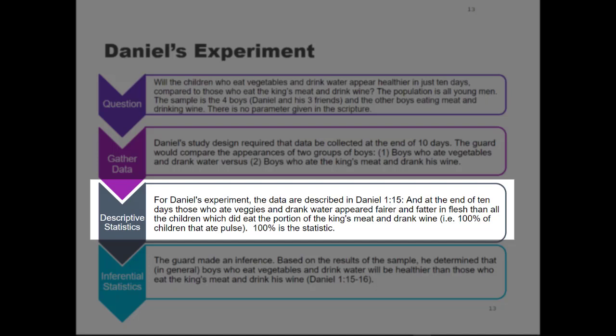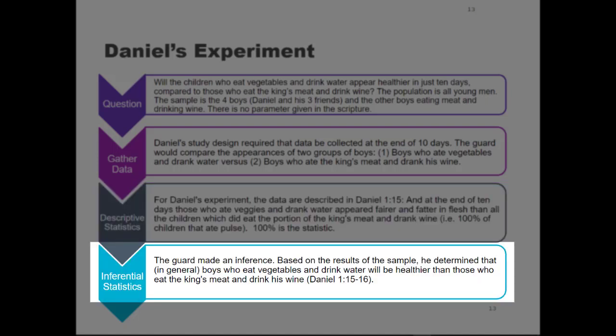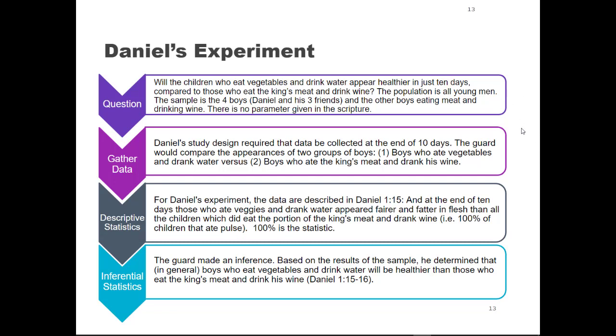At the end of 10 days, those who ate vegetables and drank water appeared fairer and fatter in flesh than all the children who ate the king's meat and drank wine. So 100% of all the children who ate the vegetables — the statistic — appeared healthier. In the last part they're making an inference from what they learned about the sample to the general population of all young men. The guard determined that in general boys who eat vegetables and drink water will be healthier than those who eat the king's meat and drink wine. This example shows all the phases of the statistical process as well as the population, sample, and statistic.